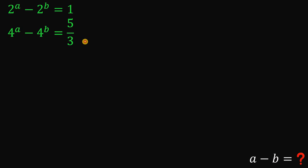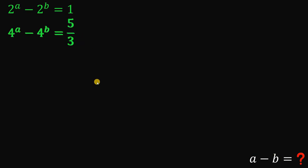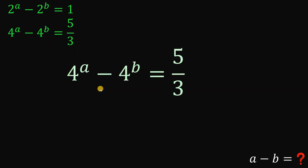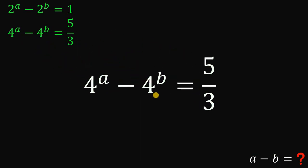Given these two equations, our goal is to find the numerical value of a minus b. Here's our solution to this question. First, let's get the second equation: 4 raised to the power of a minus 4 raised to the power of b equals 5 over 3.